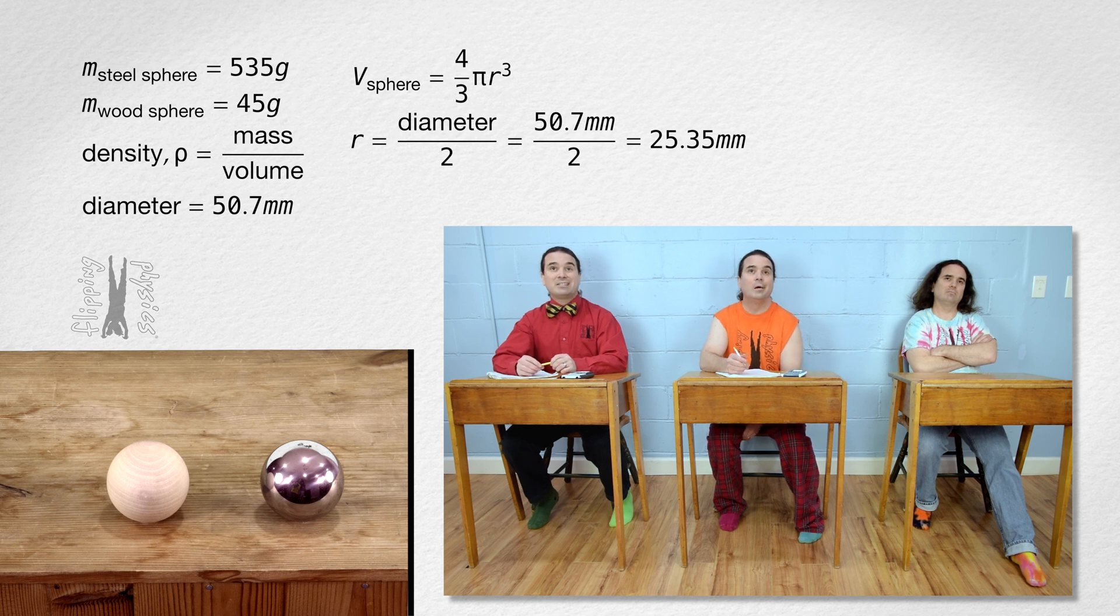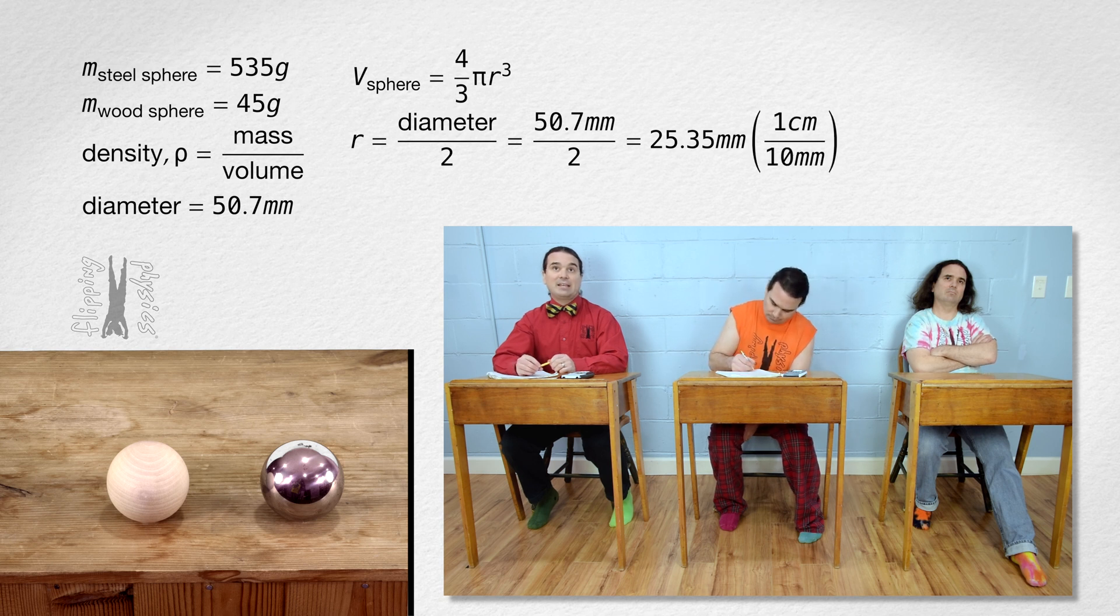There are 10 millimeters in every centimeter, so multiply the radius, or 25.35 millimeters, by 1 centimeter divided by 10 millimeters, and we get 2.535 centimeters for the radius.